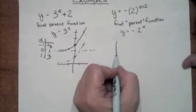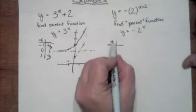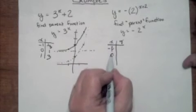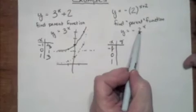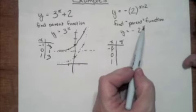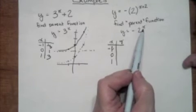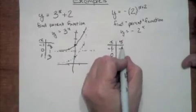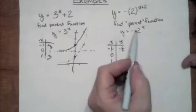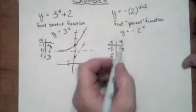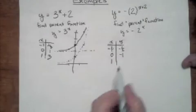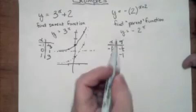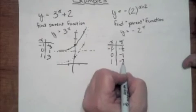So we do our table of values — x and y — with negative one, zero, and one. Two to the negative one is one-half, and with the negative sign that makes it negative one-half. Anything to the zero is one, and then we make it negative — so negative one. Then for one: two to the one is just two, and then we make it negative — so negative two.